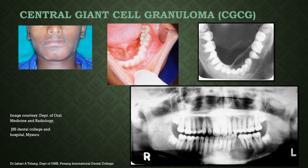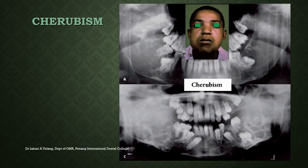Central giant cell granuloma is a reactive lesion. In this patient you can see enlargement of the chin area with vestibular obliteration intra-orally. The occlusal view shows an ill-defined mixed radiolucent-radiopaque appearance involving the area from the lateral incisor to the molar region, with a large radiolucency seen on panoramic radiograph. Central giant cell granuloma is typically anterior to the premolar region and can cross the midline. Cherubism is rare but involves multiple bone areas of the maxilla and mandible with multilocular appearance and teeth appearing to float, requiring a long-term treatment plan.